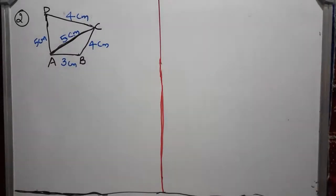Second question. Question is like this. Find the area of quadrilateral ABCD in which AB equal to 3 cm, BC equal to 4 cm, CD is equal to 4 cm.